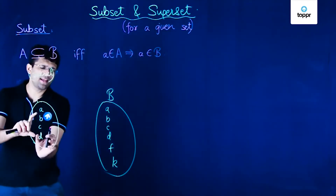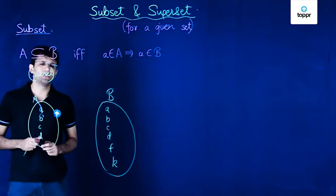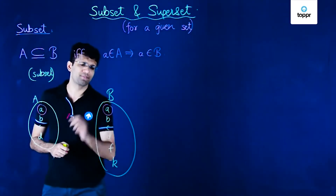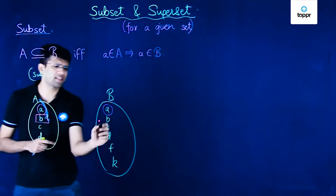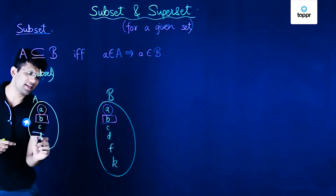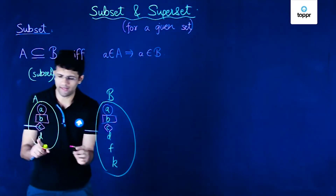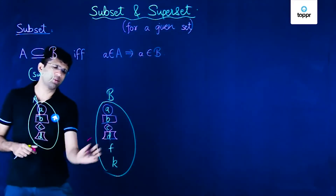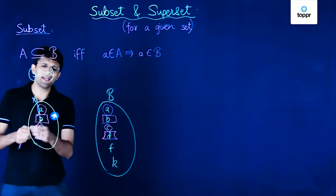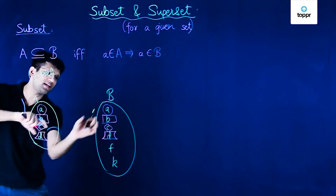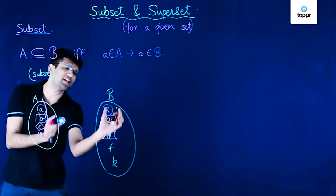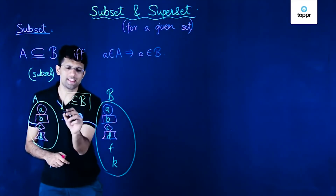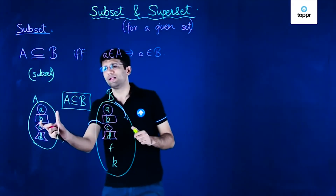Now, if every element of set A is also present in set B, then we can write that A is a subset of B. We start checking each element: small a is present in B, small b is present in B, small c is also present in B, and small d is also present in B. Set B contains additional elements, but that doesn't matter. What we want is whether every element of A is in B — and clearly it is. So we can say that set A is a subset of set B.